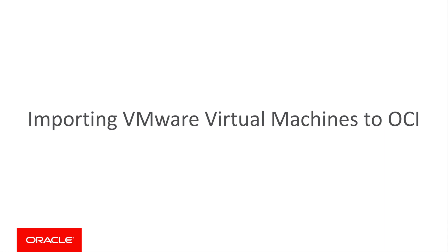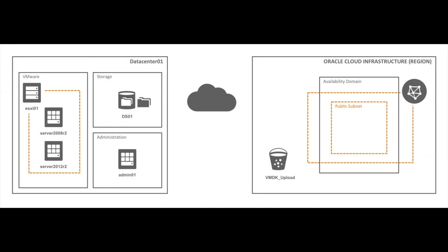Before we get started, let's take a look at the demo environment. This diagram shows a simple data center and an Oracle Cloud Infrastructure tenancy. The simple data center consists of a single ESXi host, shared NFS storage, and a Linux admin host. The OCI tenancy consists of a virtual cloud network with all related components, including a public subnet, and an OCI object storage bucket that will be used to transfer the virtual machine's VMDK to OCI.